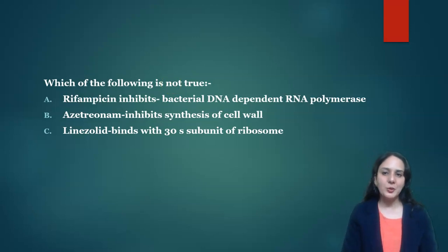Next was: which of the following is not true? Rifampicin inhibits by binding to bacterial DNA dependent RNA polymerase - yes, this is true. Next is: aztreonam inhibits synthesis of cell wall - yes. Next was: linezolid binds with the 30S subunit of ribosome - no, it binds to the 50S. It inhibits by binding to the 50S, so 30S is the wrong answer. So this was the answer.